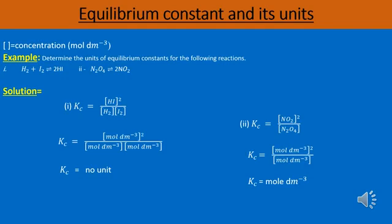raised to the power 2, where 2 means 2 moles of hydrogen iodide. In the denominator we will write the concentration of hydrogen and iodine. In the second step, we will write the concentration of each species in moles per decimeter cube within the square brackets, and in the third step we will simplify the expression.